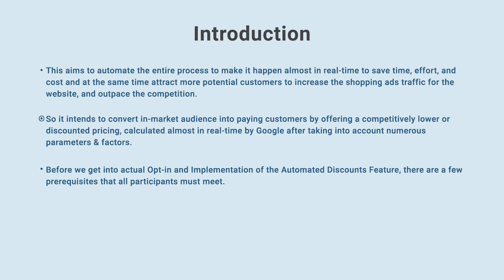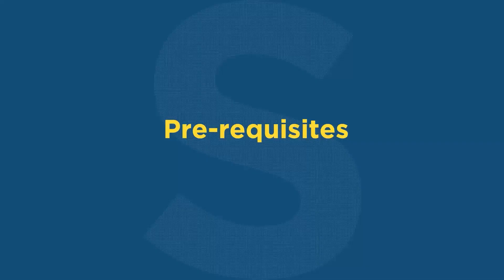It intends to convert in-market audiences into paying customers by offering a competitively lower discounted price calculated almost in real-time by Google, taking into account numerous parameters and factors. Before we get into the actual opt-in and implementation of the Automated Discounts feature, there are a few prerequisites that all participants must meet. Chapter 2: Prerequisites.